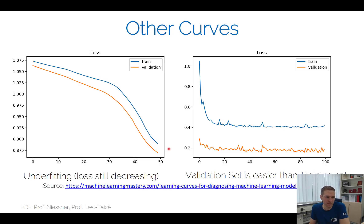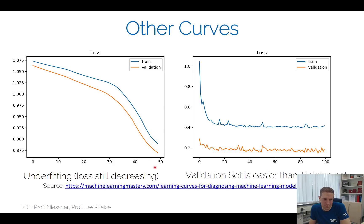Underfitting problems: an unusual curve where the loss goes down slowly first and then faster — a strange behavior. This is a specific case of underfitting where the loss is still decreasing and you probably need to train longer.